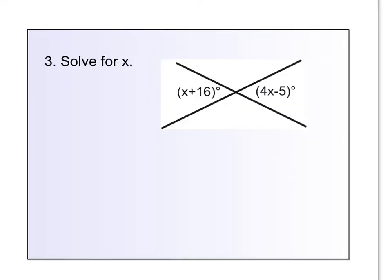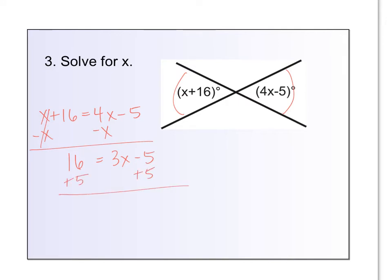Take a minute and think how would you set this one up to solve it for x. If you are thinking these are vertical angles and vertical angles when they are across from each other like this are congruent, you are correct. So the x plus 16 should equal the 4x minus 5. So subtract your x, get your variables on the same side of the equal sign. You have 16 equals 3x minus 5. And then add your 5. 21 equals 3x. Divide by 3. And 7 equals x.